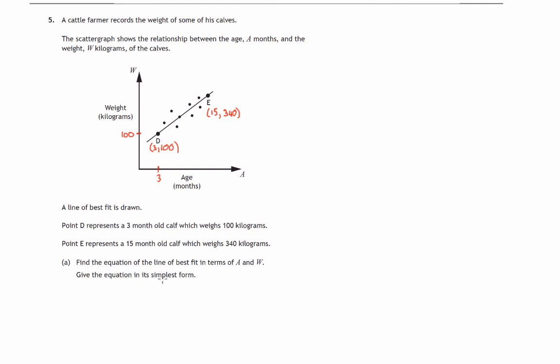And we're asked to find the equation of the line of best fit. That's this line that shows the trend of the dots on the scatter graph. We have to find the equation of that and give it in its simplest form.